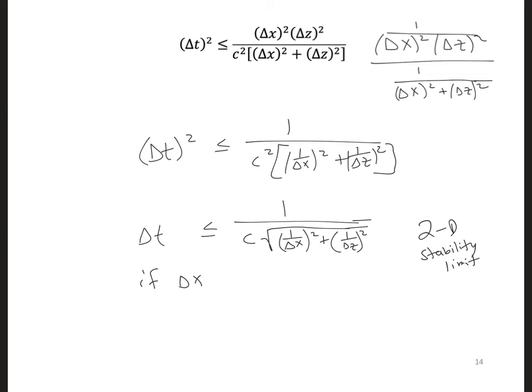Now if we take delta x and set it equal to delta z, meaning we have cubic cells, then we can simplify this even further.